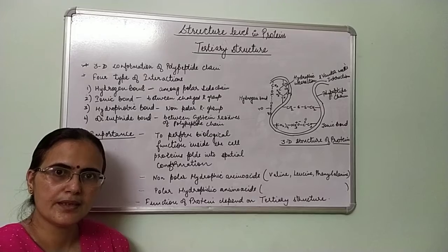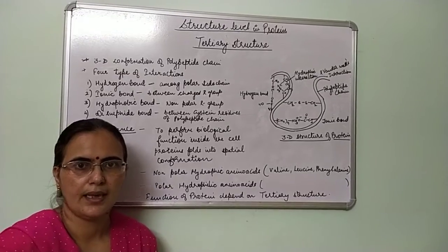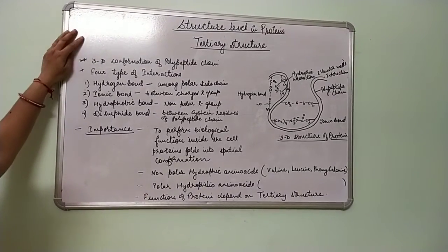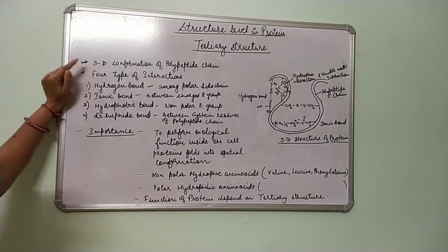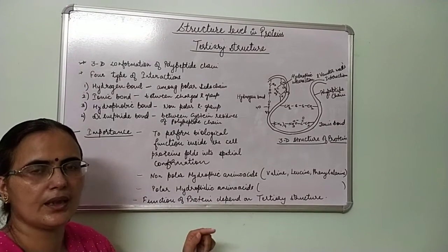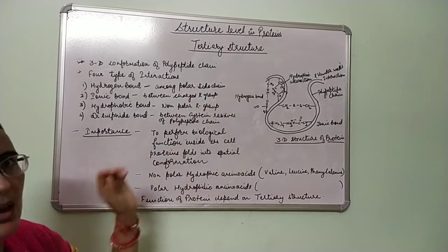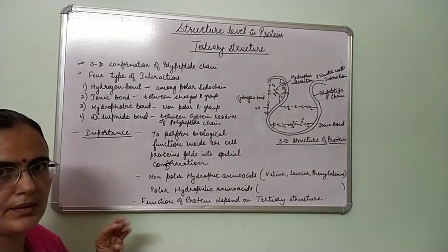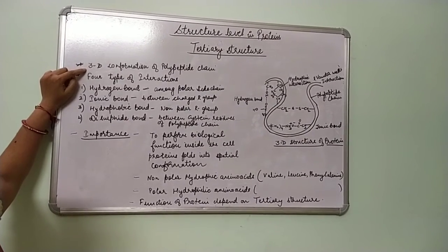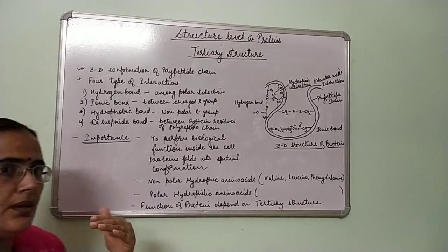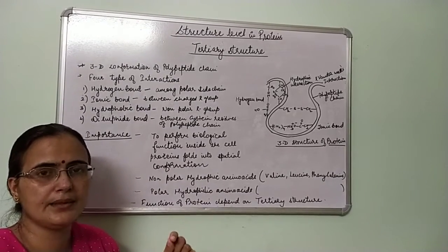Now we will study the tertiary structure of protein — what it is and how it is important. The tertiary structure of protein is the three-dimensional conformation of the polypeptide chain. In both primary, secondary, and tertiary structure, only a single polypeptide chain is involved, and this single polypeptide chain acquires a three-dimensional conformation.